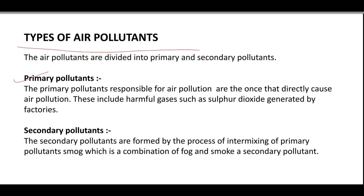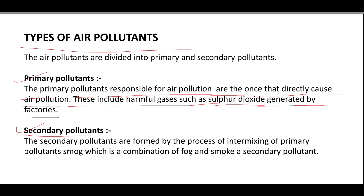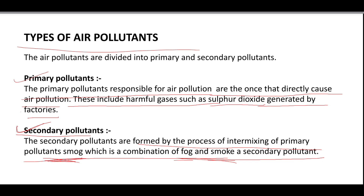There are two main types of air pollutants. Primary pollutants are those that directly cause air pollution — these include harmful gases such as sulfur dioxide (SO₂) and nitrogen dioxide (NO₂) generated by factories. Secondary pollutants, on the other hand, are formed by the intermixing of primary pollutants. For example, smog — a combination of fog and smoke — is a secondary pollutant that does not directly cause air pollution on its own.